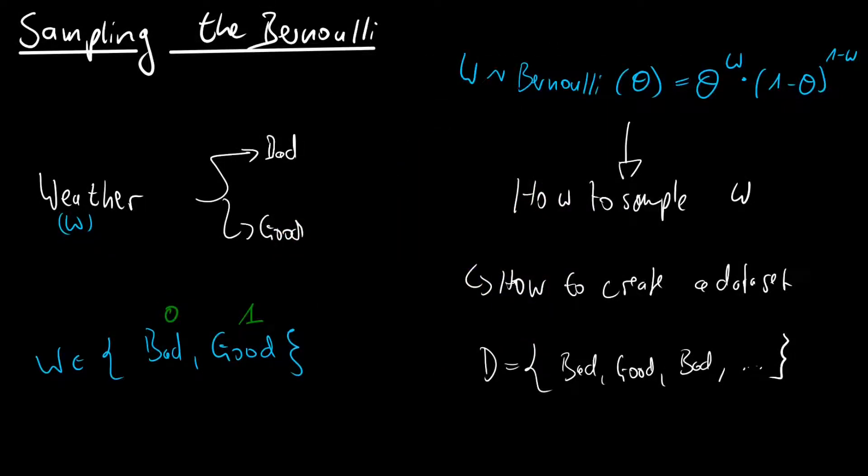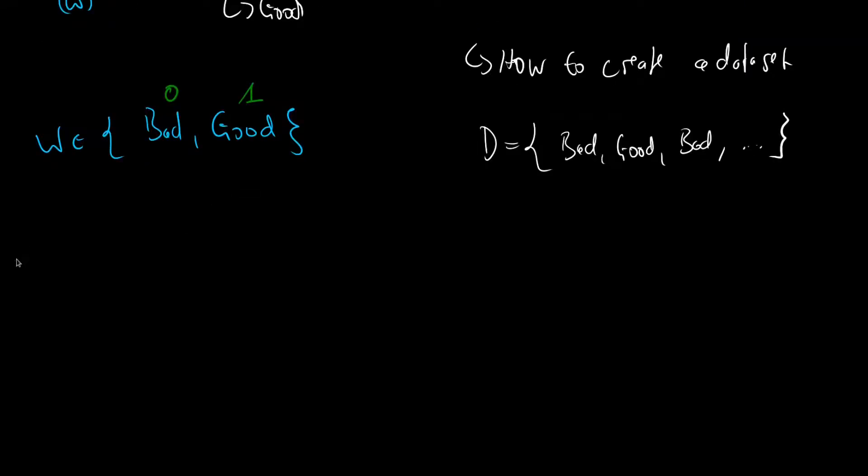Welcome to this new video. I will first give an introduction on how to do the sampling for the Bernoulli in general, or in theory, and then we will implement this in Python. Okay, let us start with what sampling actually is. So sampling is the process of going from a random variable to a random variate. And they sound quite similar, but they are different.